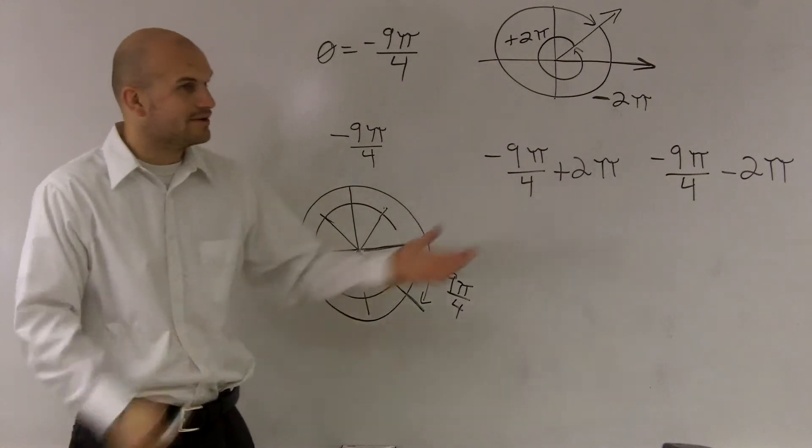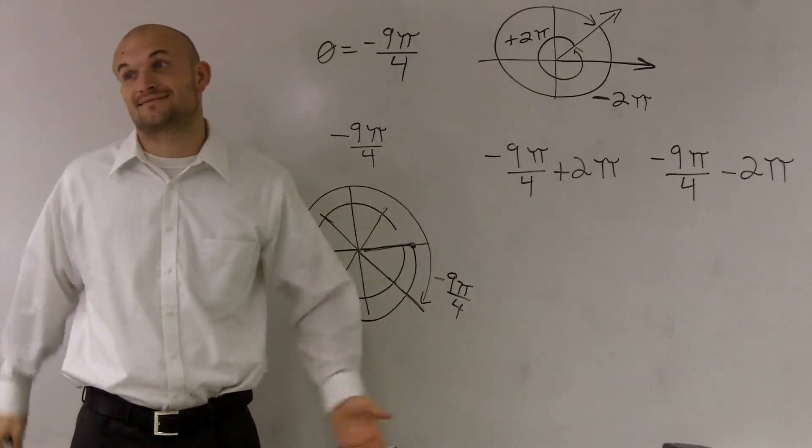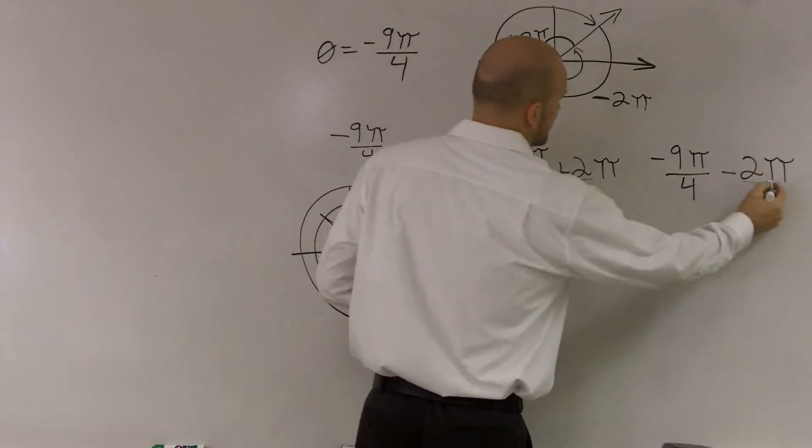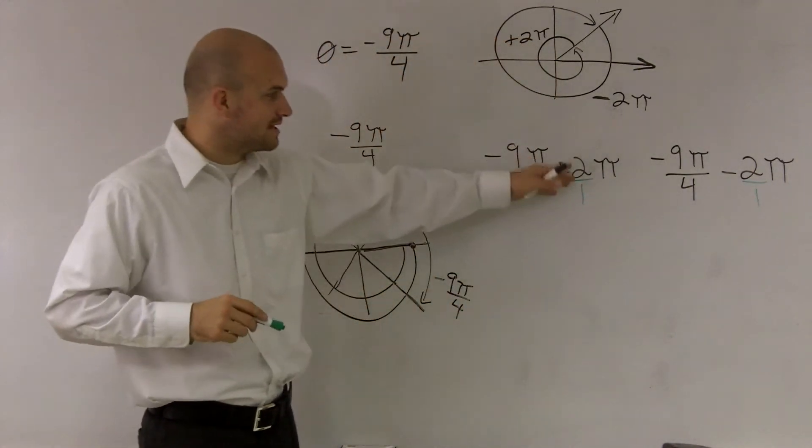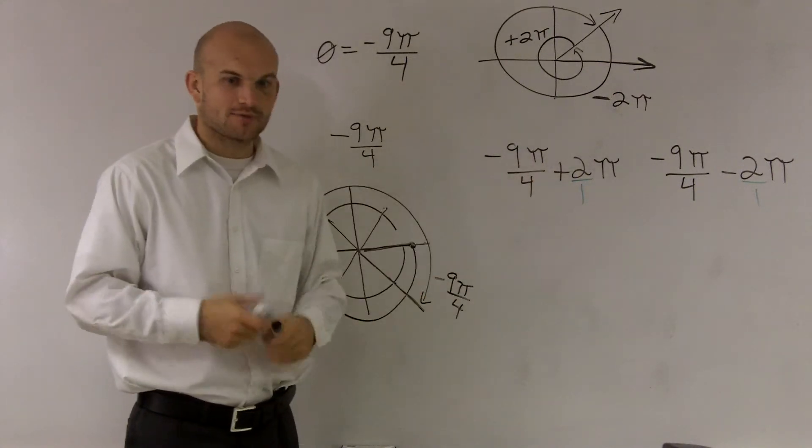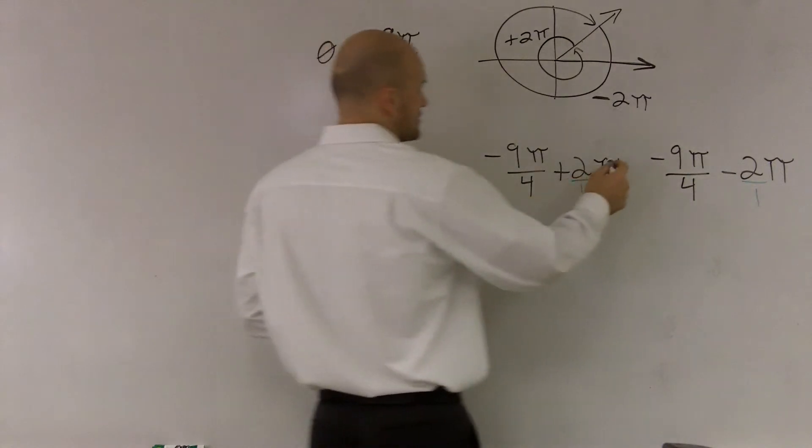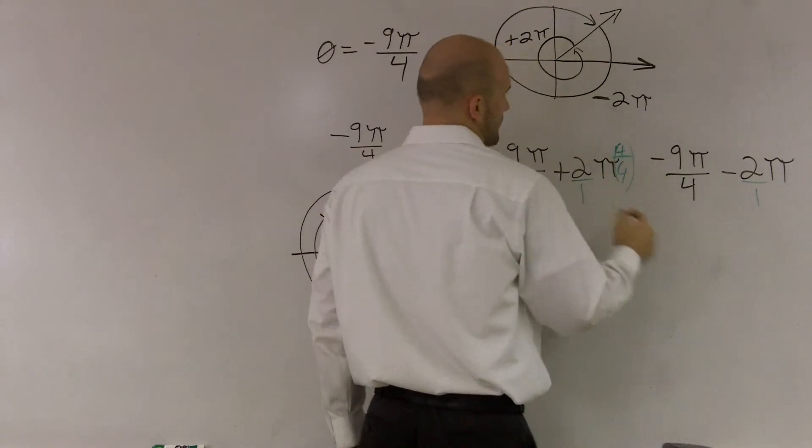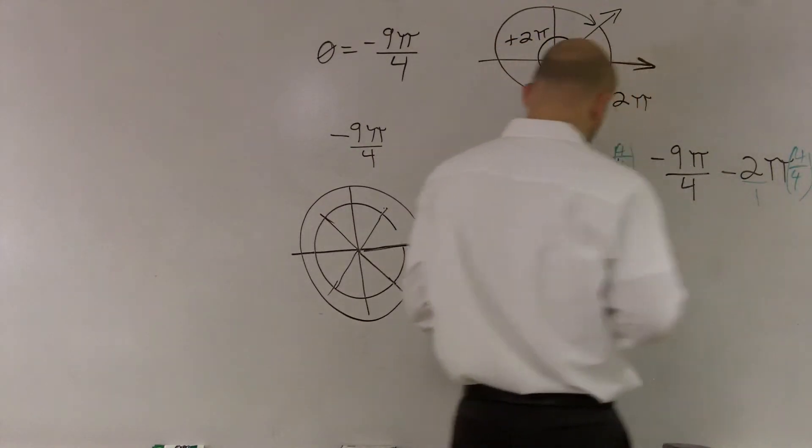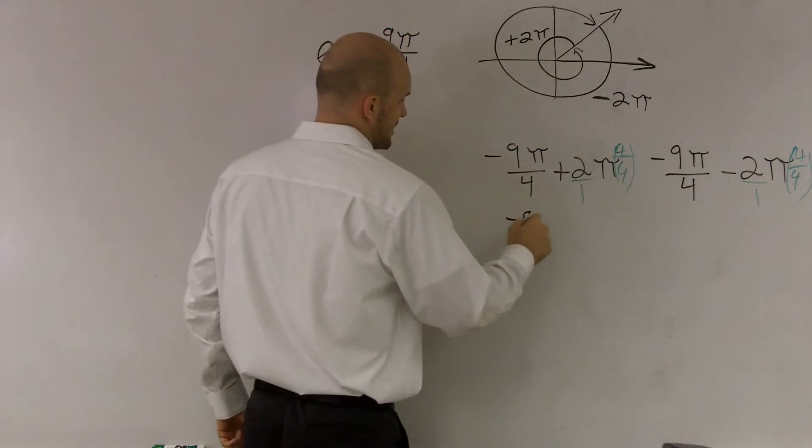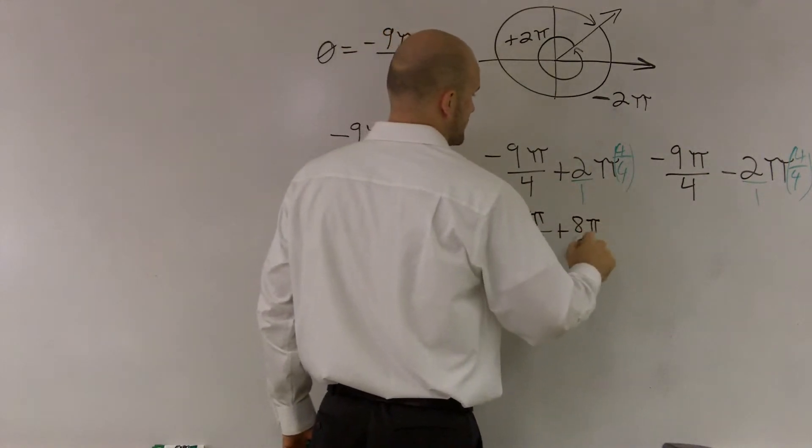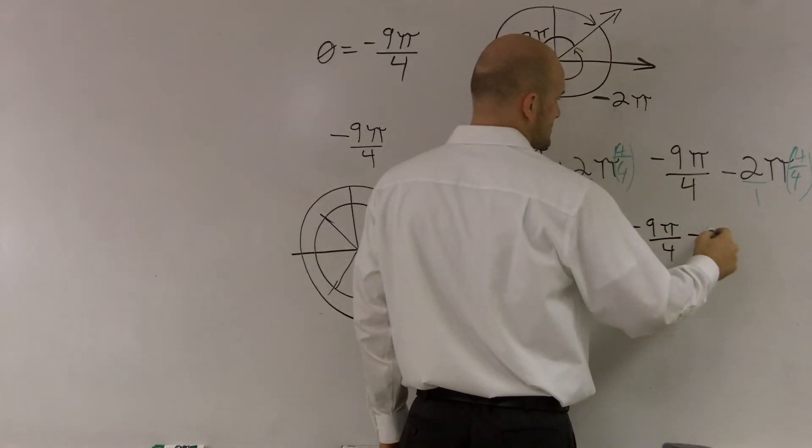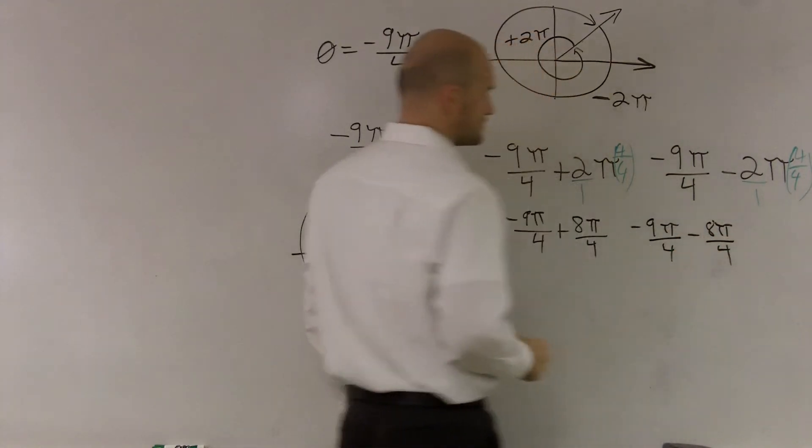So now, you guys have to remember, guess what? Fractions are making a comeback. So if you guys remember, I can write these with denominator 1. Then to add negative 9 fourths plus 2 over 1, I have to get them to add common denominators. So I need to multiply by 4 over 4. So then what I get is negative 9π over 4 plus 8π over 4, and this one is negative 9π over 4 minus 8π over 4.